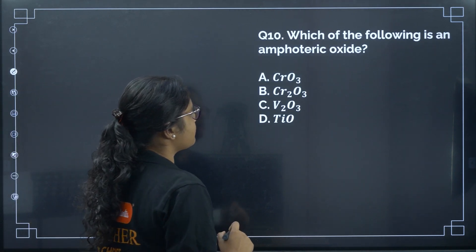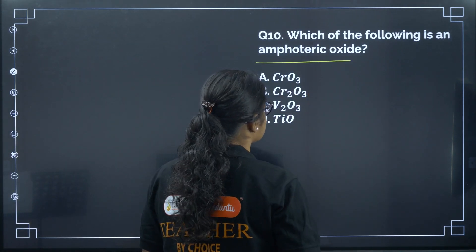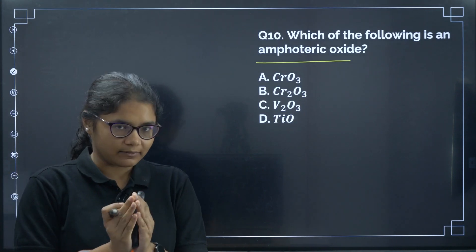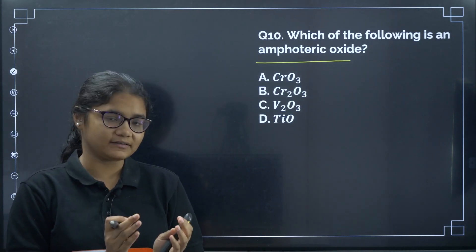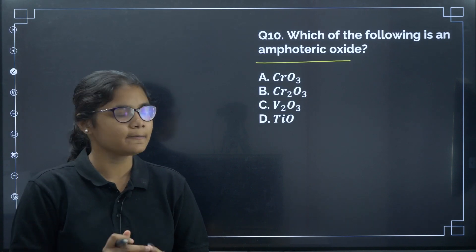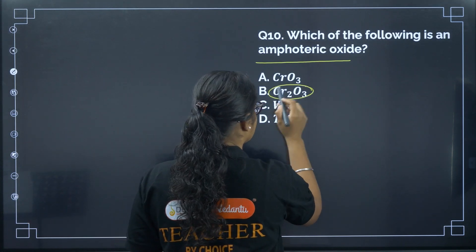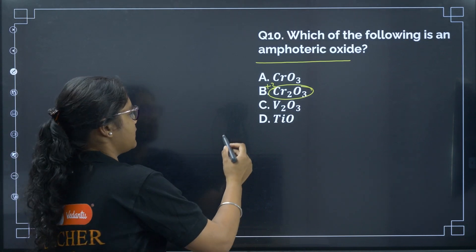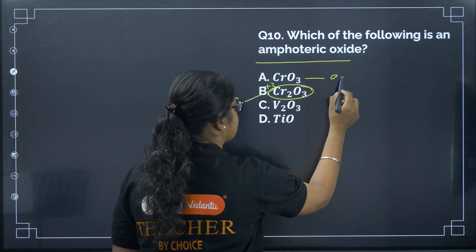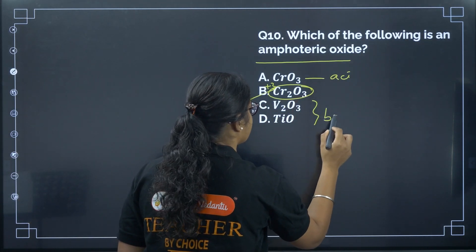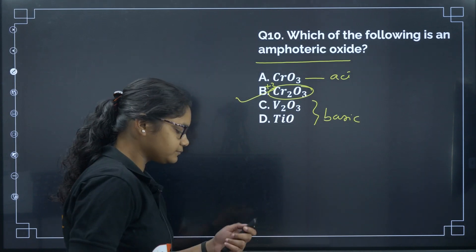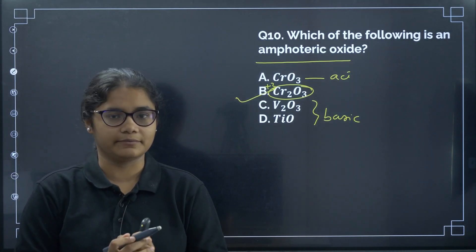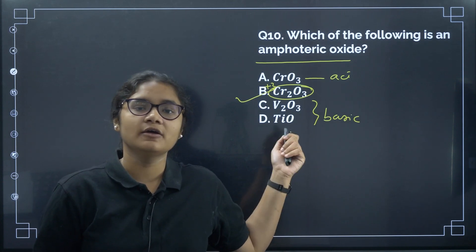Question 10: Which of the following is an amphoteric oxide? For amphoteric oxides, the oxidation state should be intermediate — very high oxidation state gives acidic, very low gives basic. Cr₂O₃ has chromium in the +3 oxidation state, making it an amphoteric oxide. Please remember examples of acidic, amphoteric, and basic oxides, as questions are asked repeatedly from this topic.